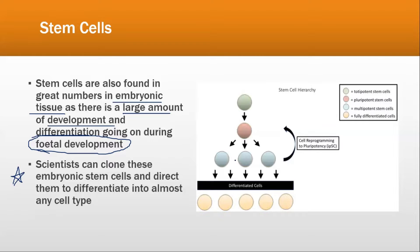Scientists can now also clone stem cells — that means further dividing and making many copies of the same type. Stem cells are found in the greatest number in bone marrow, with the largest number present in embryonic tissue. Stem cells can differentiate into almost any cell type.